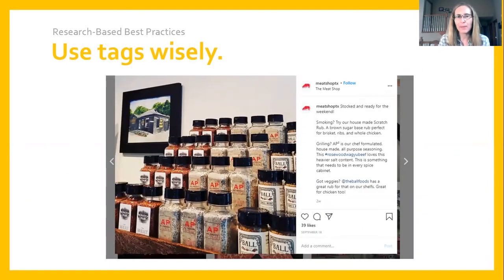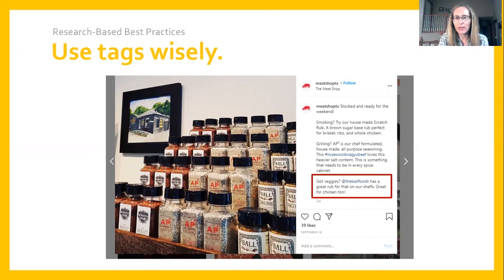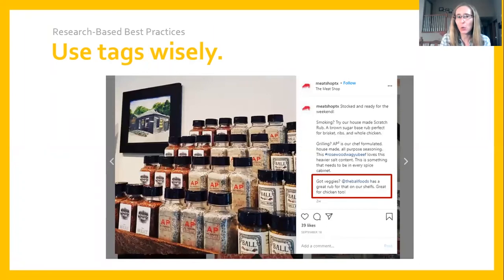The second type of tag is tagging other businesses, which is a great opportunity if you collaborate or partner with other local businesses. For instance, if you operate a retail storefront and stock products from other local businesses, you can call them out to help build awareness of their business and suggest your followers follow them too. By tagging other businesses, you have the opportunity for those businesses to return the favor, potentially introducing your account to individuals who might be interested in your brand but aren't already following you on Instagram.